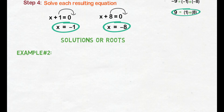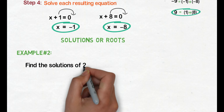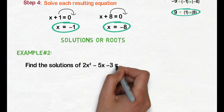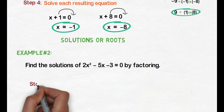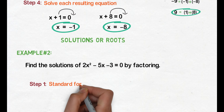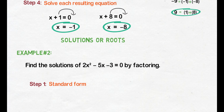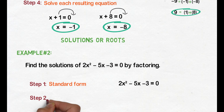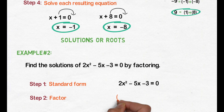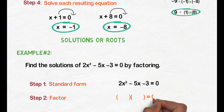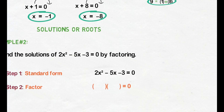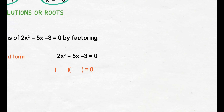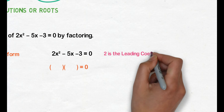Example number 2: find the solutions of 2x squared minus 5x minus 3 equals 0 by factoring. Step 1, transform the quadratic equation into standard form. Since naka-standard form na ang given quadratic equation, i-re-write lang natin ito. Step 2, factor the quadratic expression. Gagawa tayo ulit ng parenthesis para sa dalawang binomial factors. Then, identify natin ang leading coefficient — 2 is the leading coefficient.